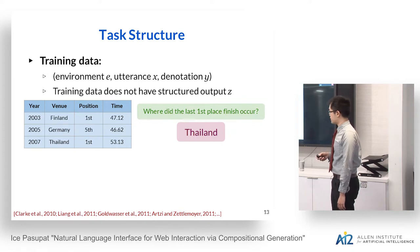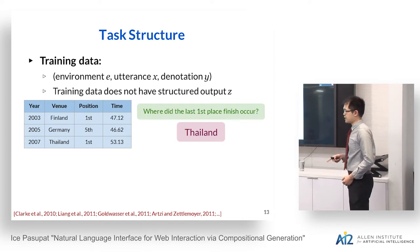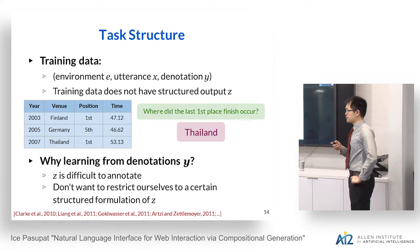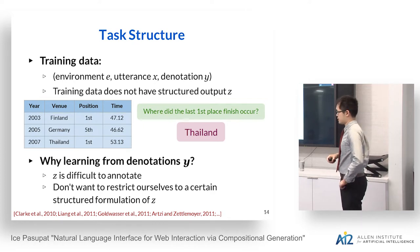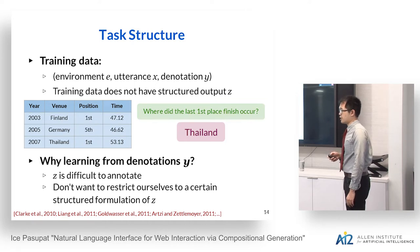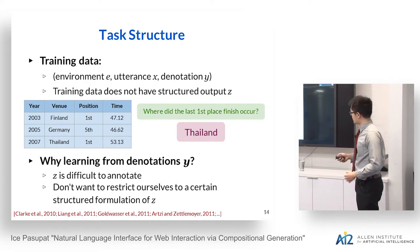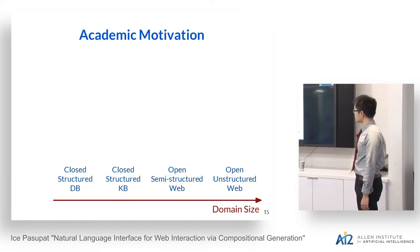Our training paradigm assumes the training data only has the environment, the utterance, and the denotation Y — not the structured output Z. We don't want Z in training data for two reasons. First, Z is hard to annotate — nobody wants to annotate complex logical forms. Second, we don't want to restrict the logical form formulation, so others can use something like SQL with our denotation as a training signal.